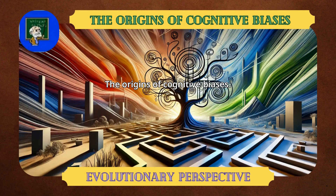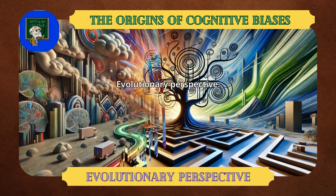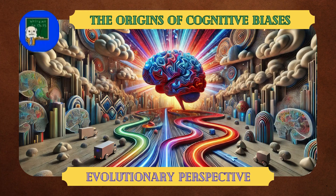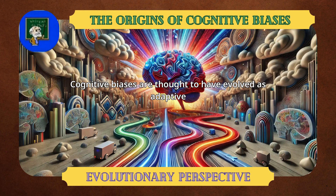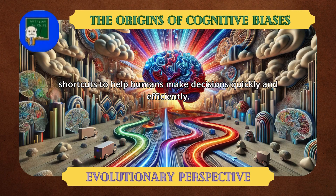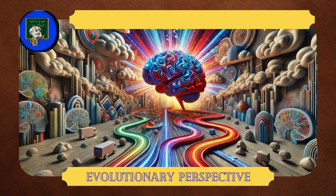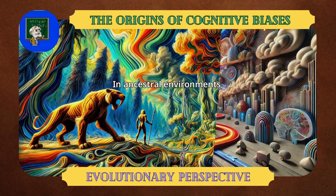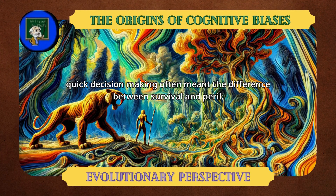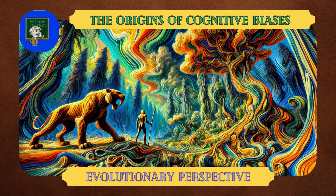The Origins of Cognitive Biases: Evolutionary Perspective. Cognitive biases are thought to have evolved as adaptive shortcuts to help humans make decisions quickly and efficiently. In ancestral environments, quick decision-making often meant the difference between survival and peril.